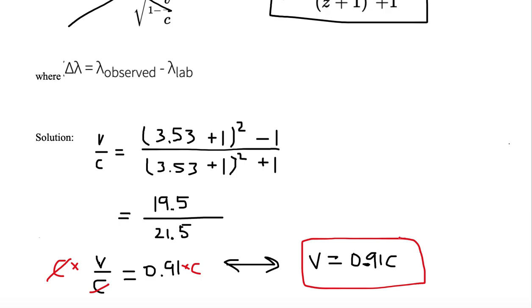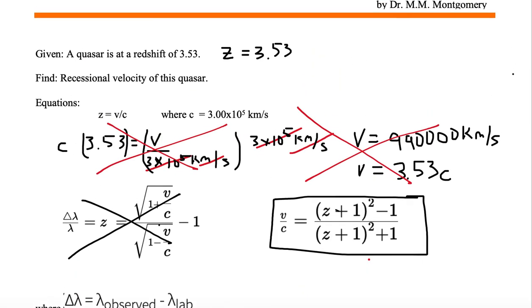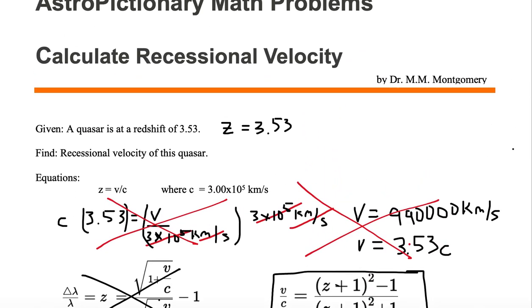So now this quasar is moving away from us at 91% of the speed of light. It certainly isn't going faster than the speed of light. So in general, whenever you're given a redshift, and a redshift z is going to be greater than 1, if you're given a z of greater than 1, use this equation. If you're given z less than 1, use that equation.